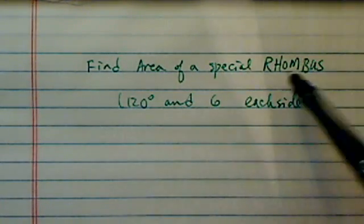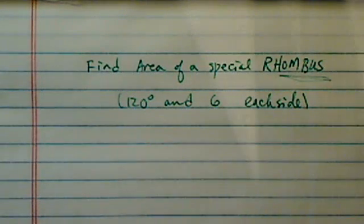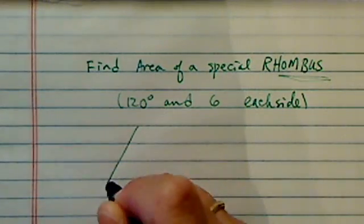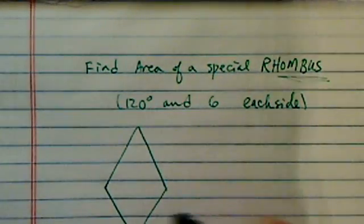It says find an area of a special rhombus. Now, if you remember, rhombus is a four sides, all equal. Let's actually draw it out here. So, four sides must be equal.